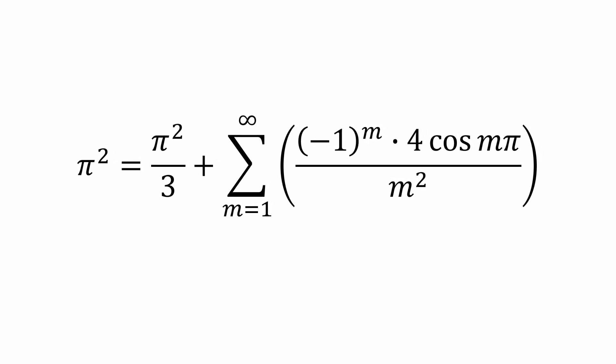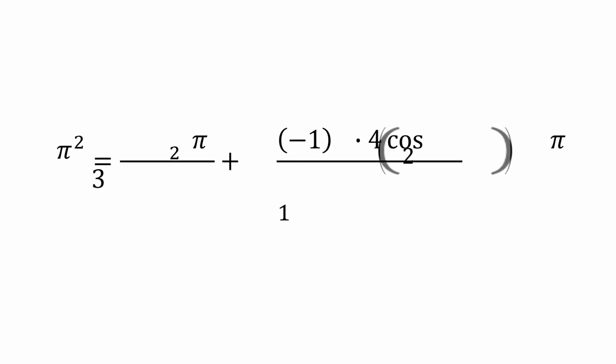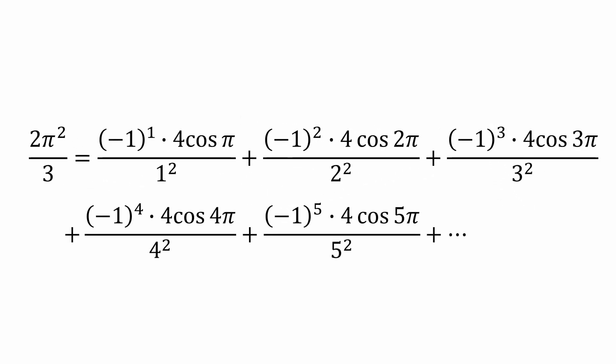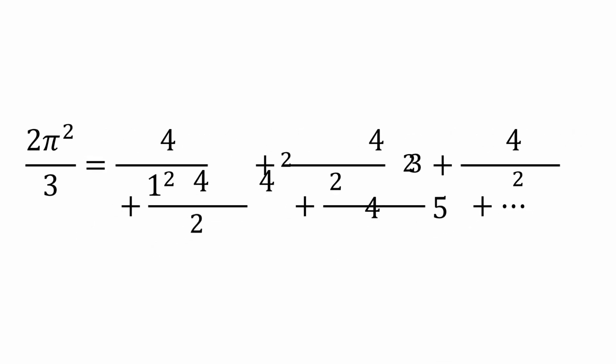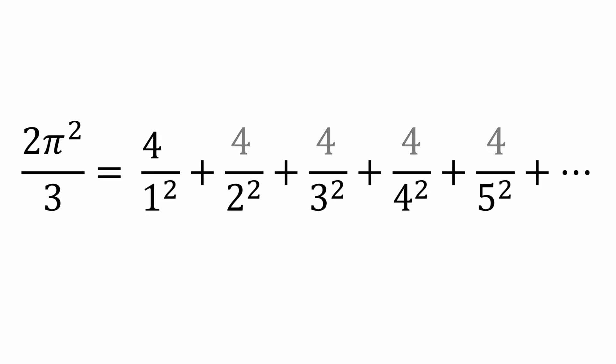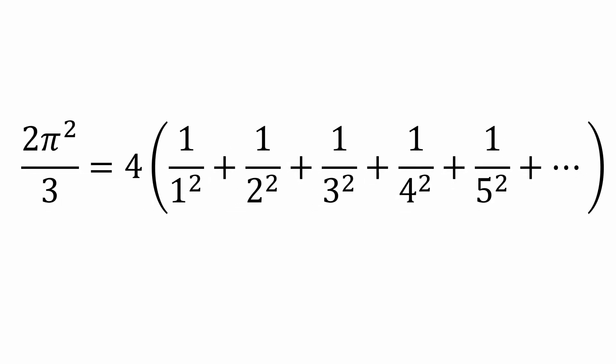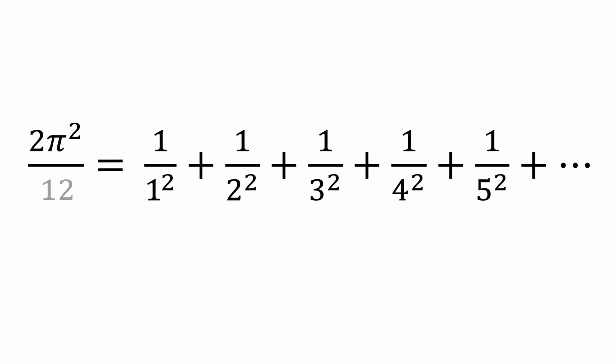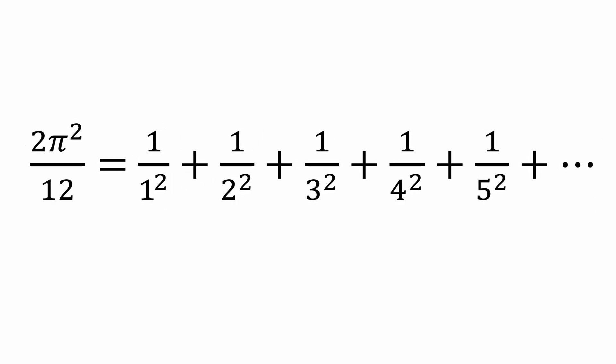After we expand the sum, we're going to get the following. And after simplifying all the powers of negative 1 and the cosine expressions, which are basically equal to negative 1 for odd multiples of π and positive 1 for even multiples of π, we're left with this. Let's factor out the 4. And now divide both sides by 4. The left side becomes π² over 6.